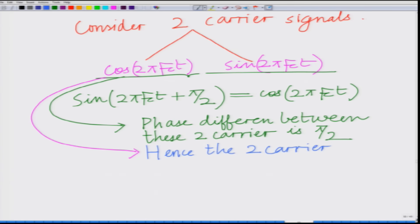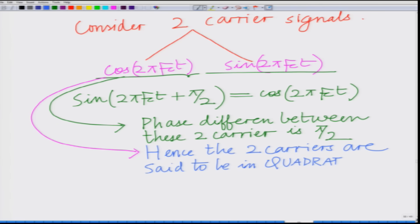Hence, these two carriers — cosine(2π·fc·t) and sine(2π·fc·t) — are said to be in quadrature, since the phase difference between them is π/2.